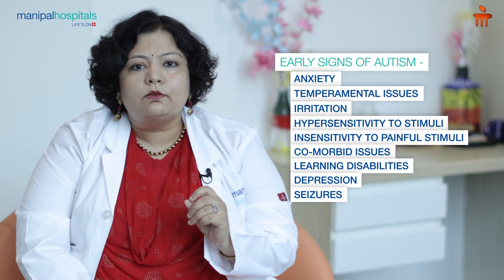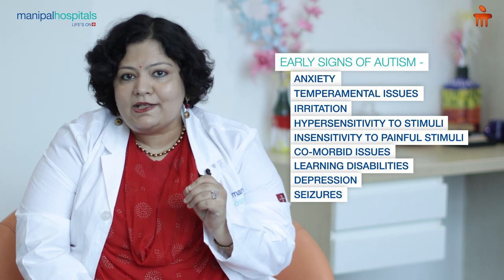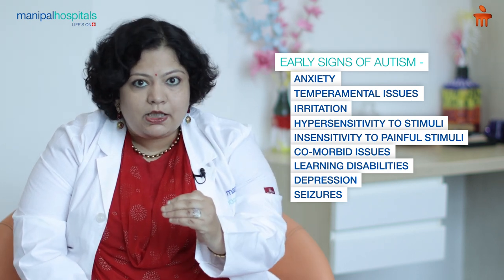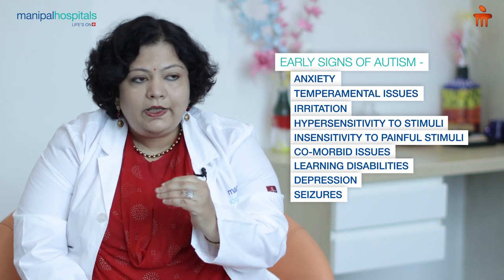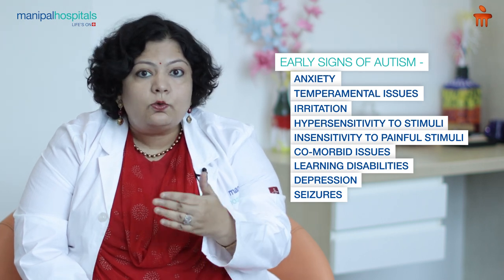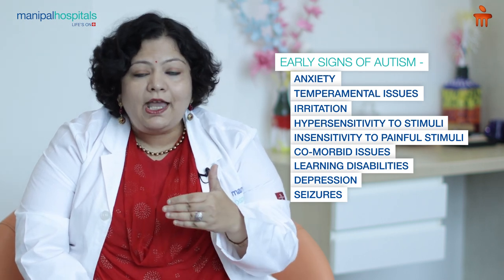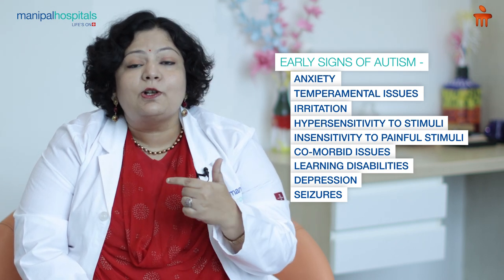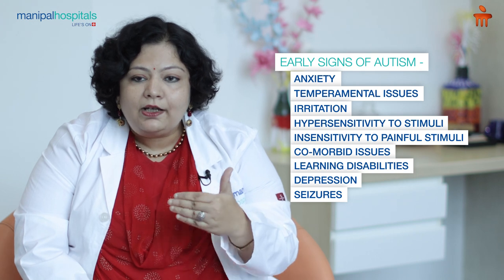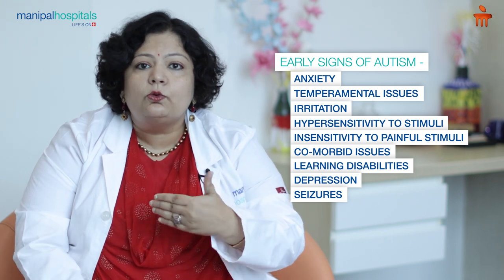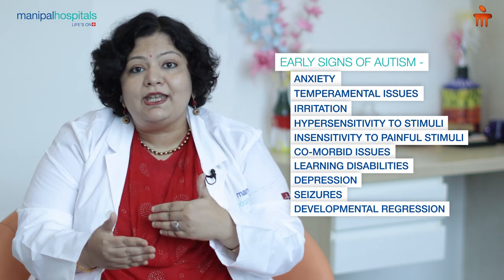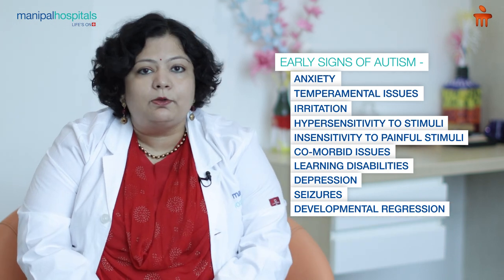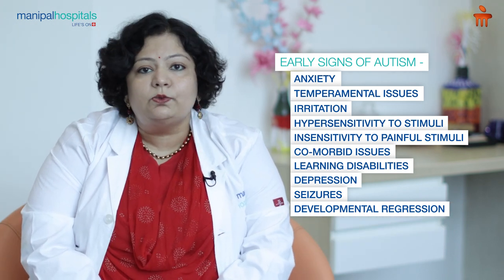In a few cases, a child may develop normally till 18 months or even nine months, and then there could be a loss of milestones — regression. We have cases where the child was making eye contact earlier and was talking earlier, but after 18 to 20 months there could be a reversal, and they may not be able to do the activities they were doing earlier.